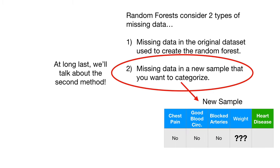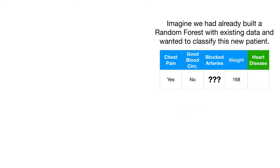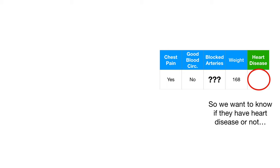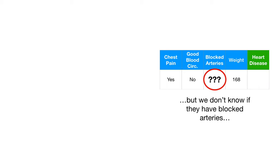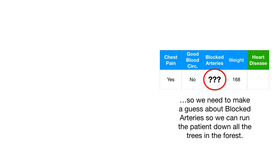Okay, enough fun stuff. Let's get back to the missing data problem. At long last, we'll talk about the second method. This is when we have missing data in a new sample that we want to categorize. Imagine we had already built a random forest with existing data and wanted to classify this new patient. So we want to know if they have heart disease or not. But we don't know if they have blocked arteries. So we need to make a guess about blocked arteries so we can run the patient down all the trees in the forest.